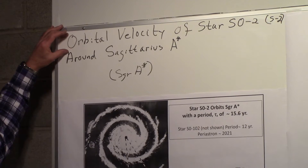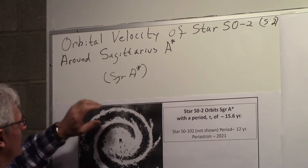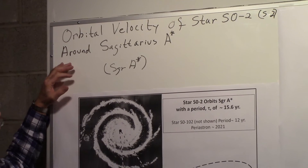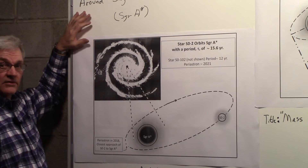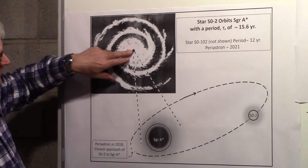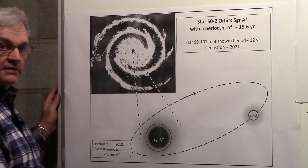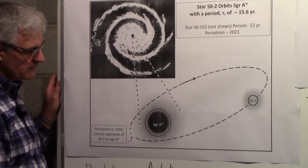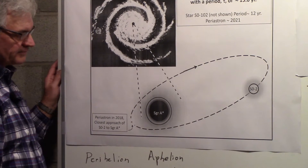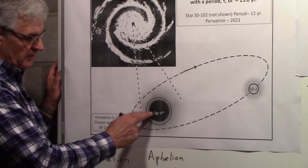We want to determine what the orbital velocity is of a star known as SO2, or S2, and its orbit around Sagittarius A* — the supermassive black hole at the center of our Milky Way. This diagram shows a sketch of the Milky Way galaxy with the supermassive black hole in the center and Earth out here. We'll take a close-up look at Sagittarius A*, with star SO2 orbiting it, and find out how fast SO2 is moving when it's close to the supermassive black hole.